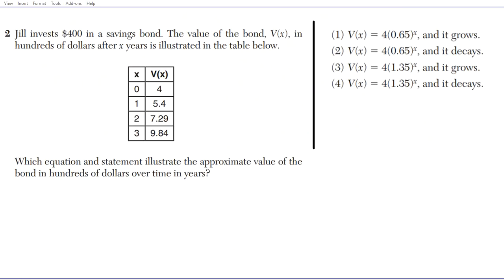Let's take a look at question 2. Jill invests $400 in a savings bond. The value of the bond v(x) in hundreds of dollars after x years is illustrated in a table. The question asks which equation and statement illustrate the approximate value of the bond over time. Examining the options, equations come in identical pairs — the difference between options 1 and 2, and 3 and 4, is that one indicates growth and the other decay.